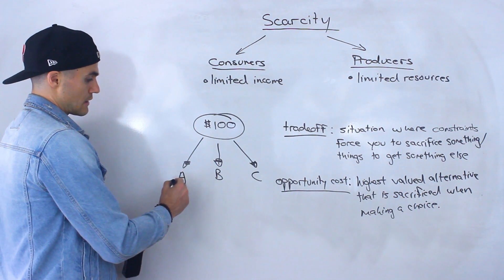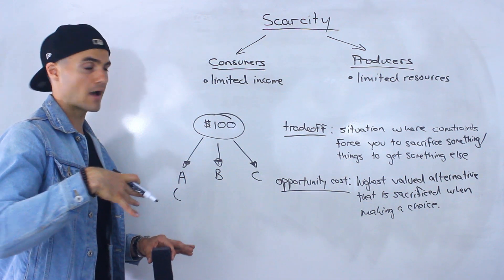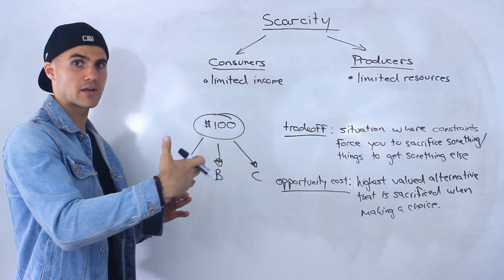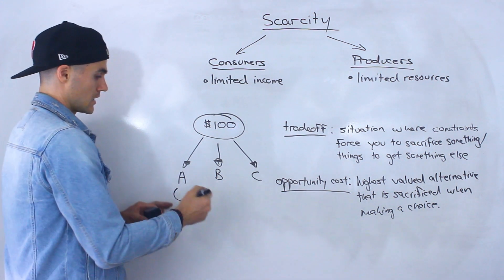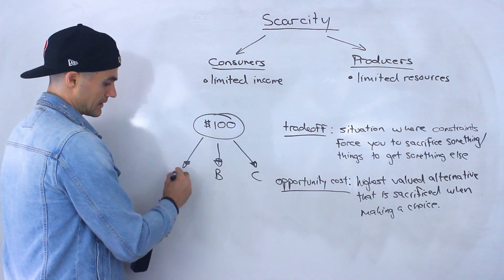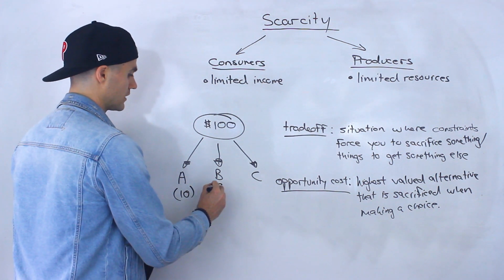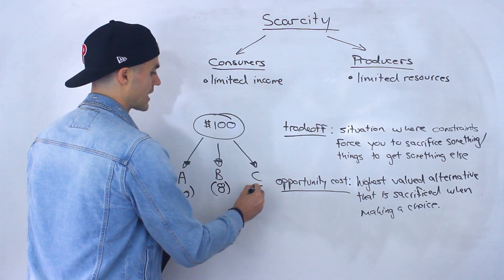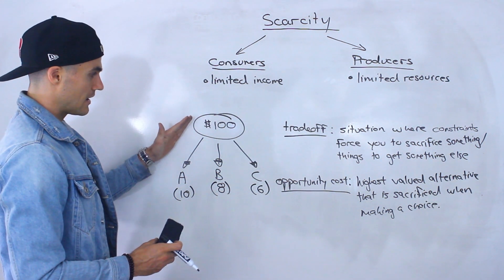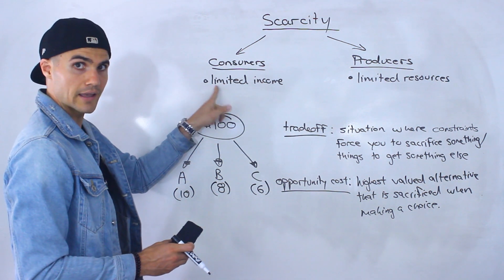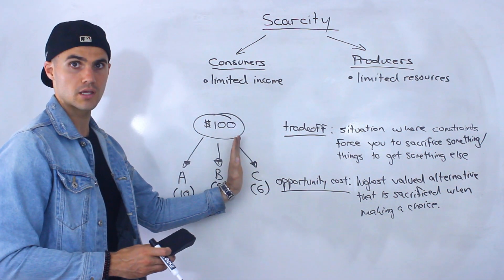Let's say that product A has a value to you as a consumer. How do consumers value something? Through utility — through the satisfaction they derive from consuming it. So let's say there's a scale for utility: product A has a utility of 10, product B has a utility of 8, and product C has a utility of 6. With this hundred dollars — this limited income — you can only pick one of these three choices.